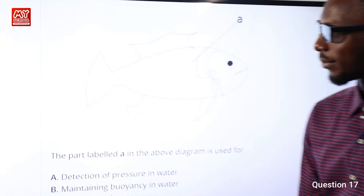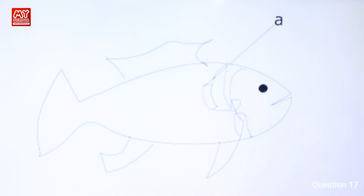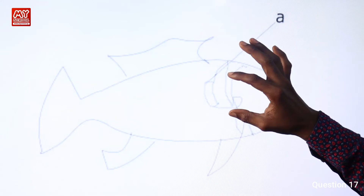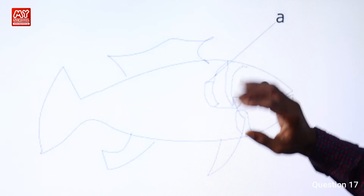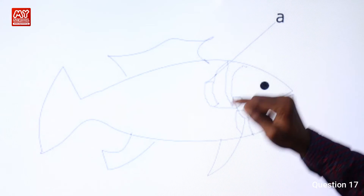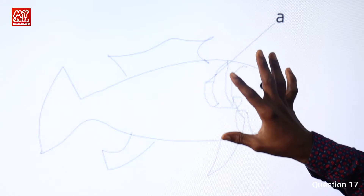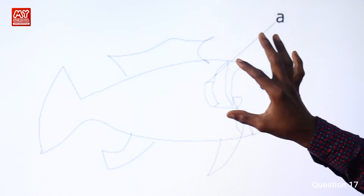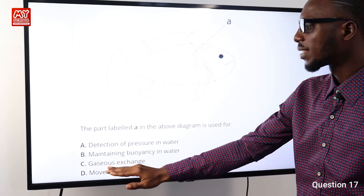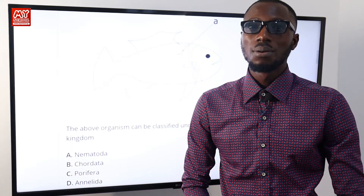Question number seventeen: the part labeled A in the diagram above is used for what? This is either referred to as the operculum, the gill cover, or the gill floor. It assists in gaseous exchange between the gills inside the fish — this part protects the gills. Going through our options, this is for gaseous exchange, so option C is correct.